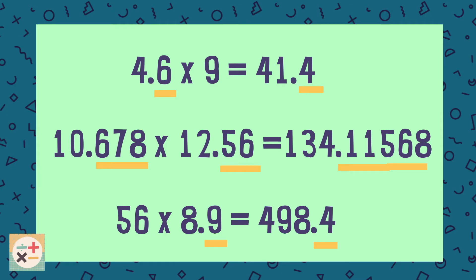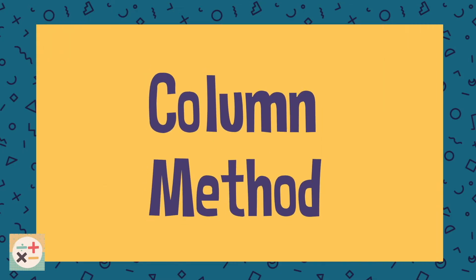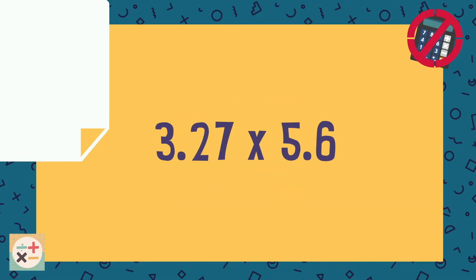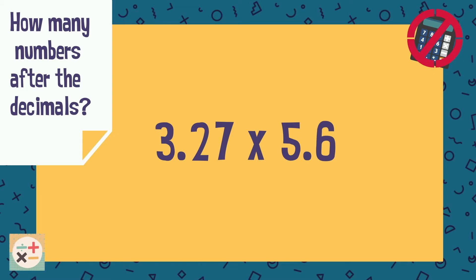This is the principle we are going to use with the first method. This can be used with a few multiplication methods such as the line or the grid method, but here we are going to demonstrate this with the column method. Firstly, make a note of how many numbers are after the decimal point in both factors.